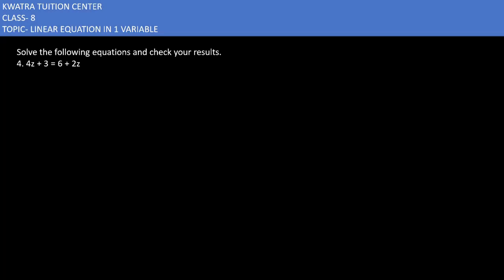The fourth one is 4z plus 3 equals 6 plus 2z. If you have 4z plus 3 equals 6 plus 2z, then what we can do is that z terms go one direction and numerical terms go one direction. So you have 4z minus 2z on one side, and on the other direction...